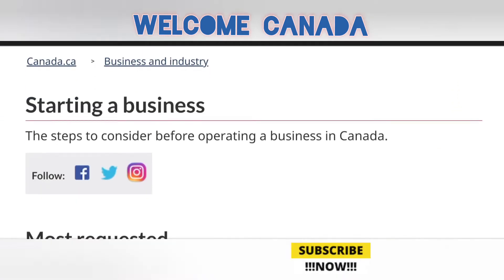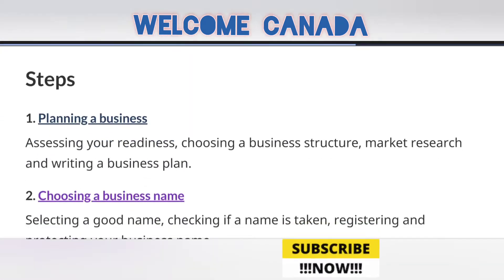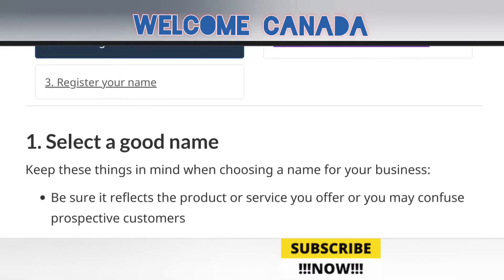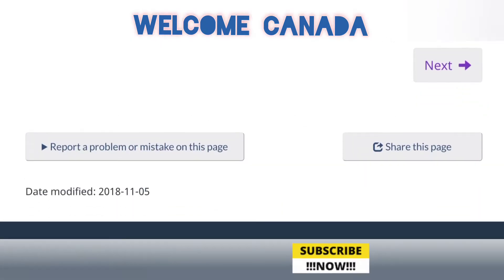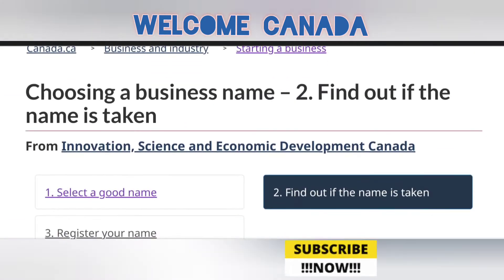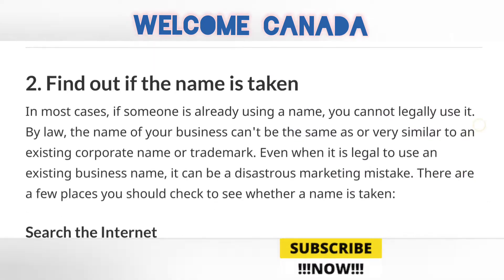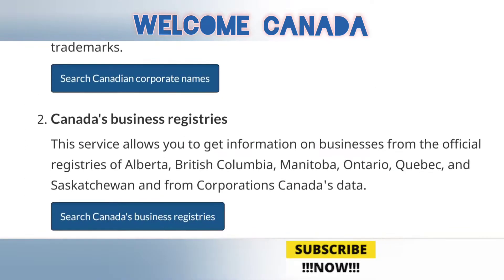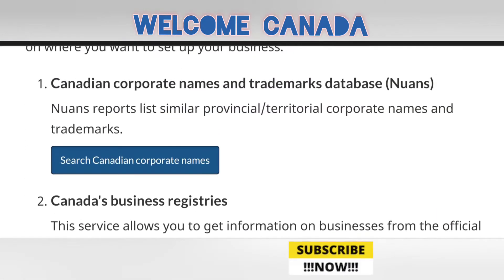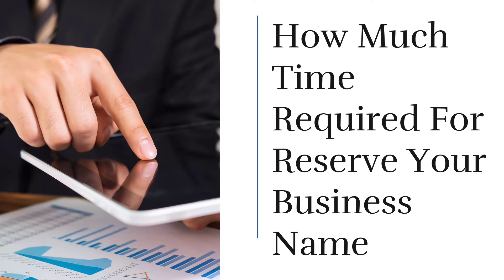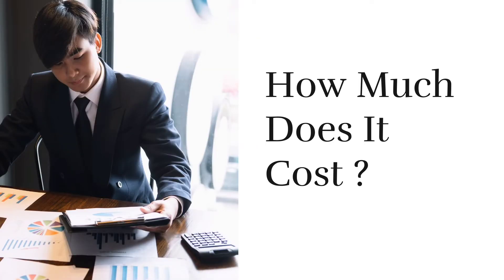This is the second part of the series 'How to Start a Business in Canada.' If you came directly here for the NUANS report, I highly request that you go and first watch the first part of this series, then come here. For the NUANS report, you go to the official Government of Canada website, click on Business and Industries, then Starting a Business, then Choosing a Business Name, and you will reach the NUANS report. How much time is required? It takes hardly 10 to 15 minutes. How much does it cost? It costs up to $13.80 — it's very cheap.